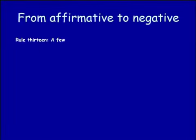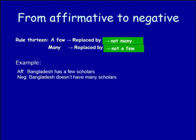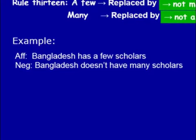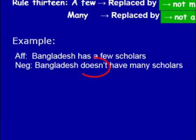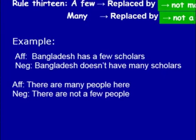Rule number thirteen: 'a few' is replaced by 'not many,' and 'many' is replaced by 'not a few.' Note that 'a few' and 'many' are used with countable nouns. Make the verb negative using 'not.' Where there is no auxiliary verb, use a helping verb. For example: 'Bangladesh has a few scholars' becomes 'Bangladesh does not have many scholars.' Another example: 'There are many people here' becomes 'There are not a few people here.'